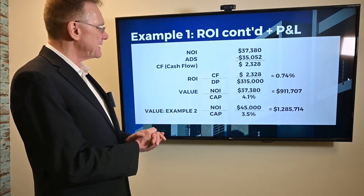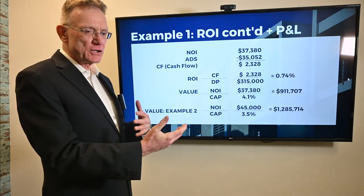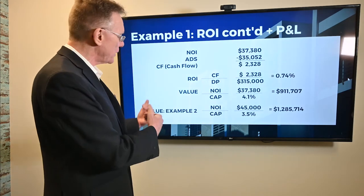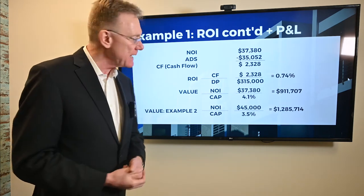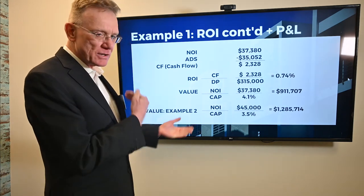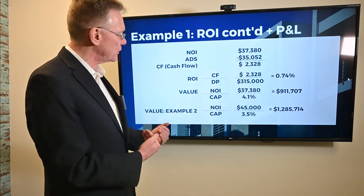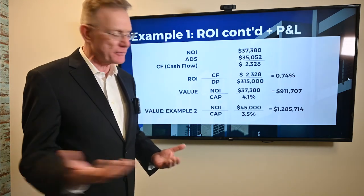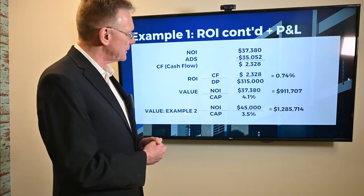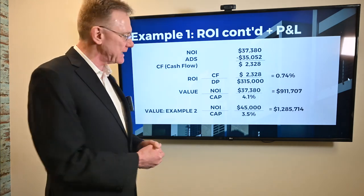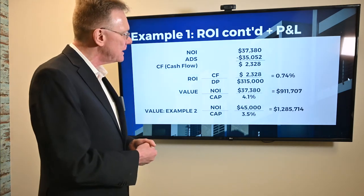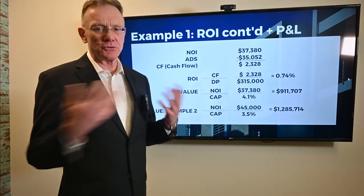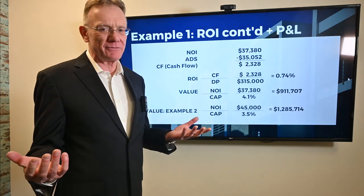To look at the value of the property in reverse — as we discussed before — we take our NOI of a little over $37,000 and our cap rate of 4.1, and that tells us the property is worth about $911,000.